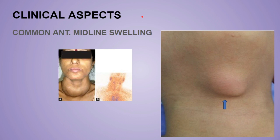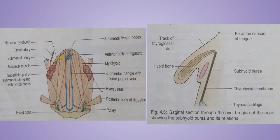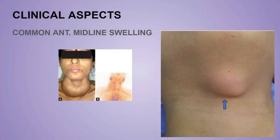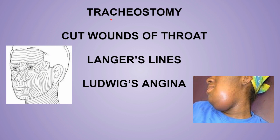Regarding clinical aspects of the anterior region of the neck: common anterior midline swellings may be caused by goiter, carcinoma of the larynx, enlargement of the submental lymph nodes in the submental triangle, or inflammation of the subhyoid bursa.